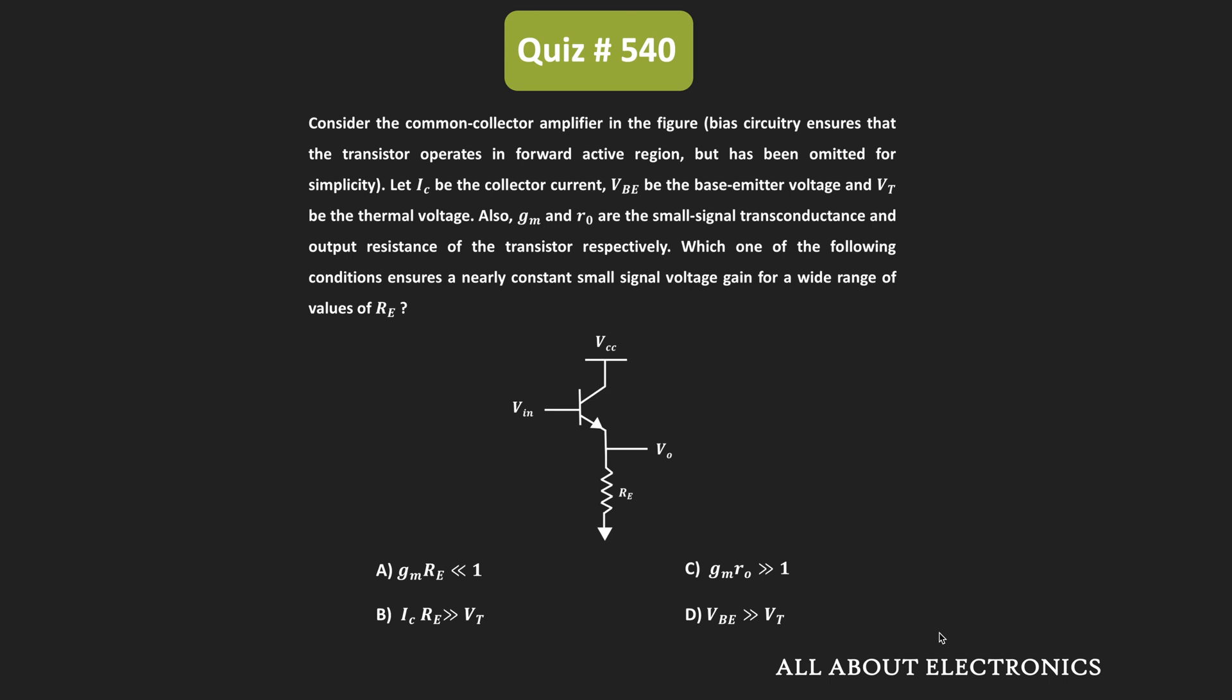For the given circuit, we have been asked to find under which condition the small signal voltage gain of this common collector amplifier will remain nearly constant over the wide range of values of Re.